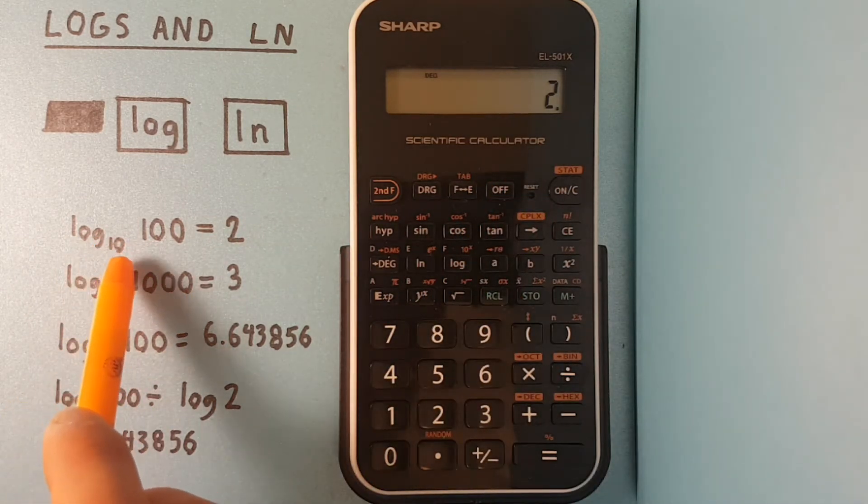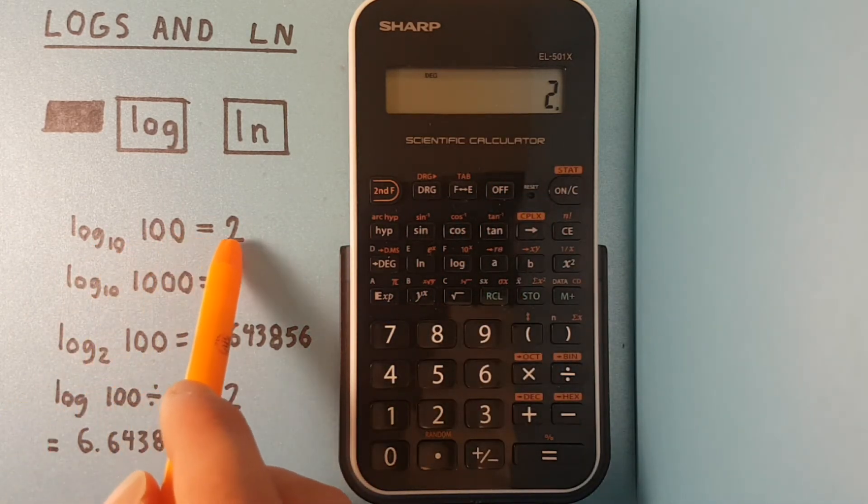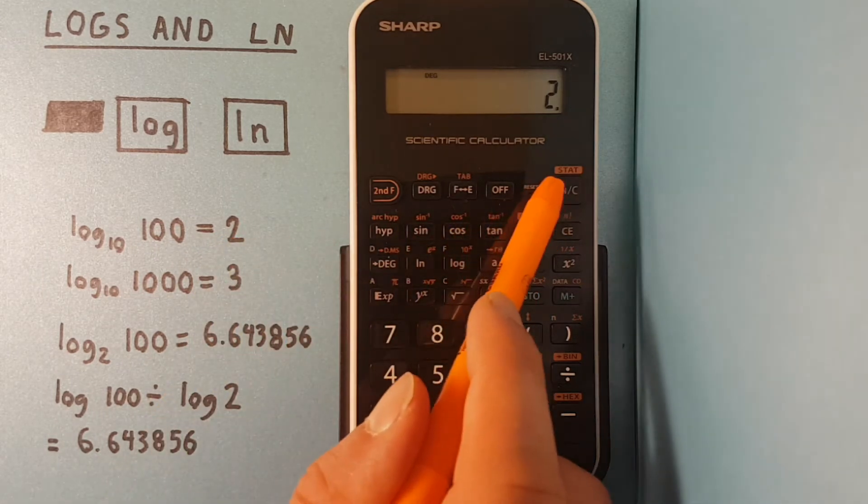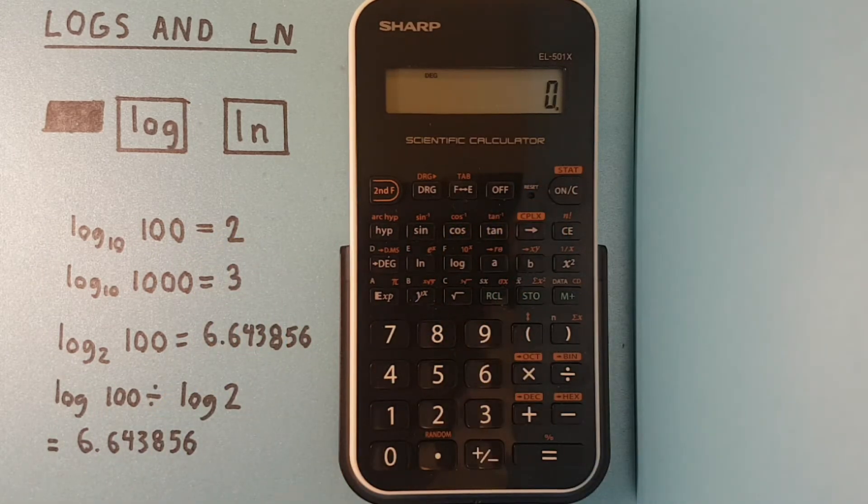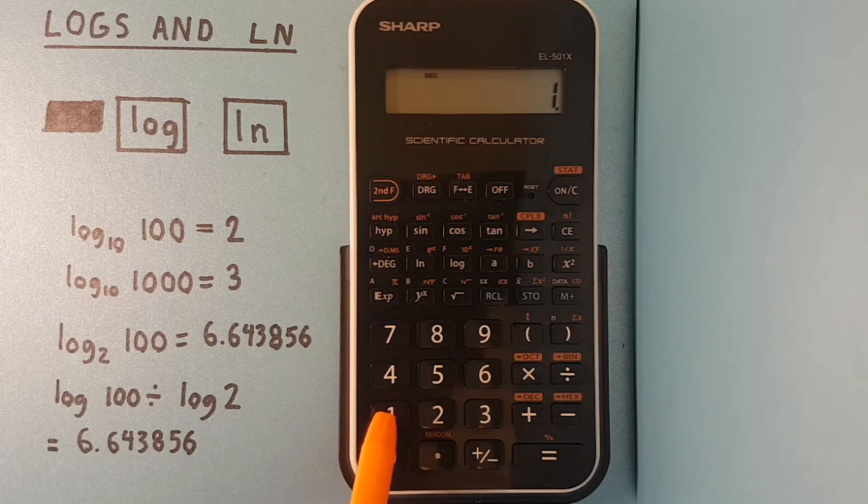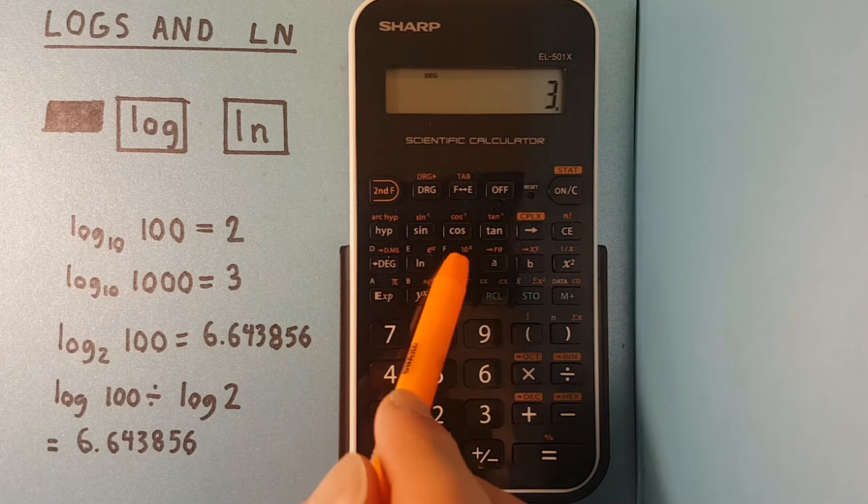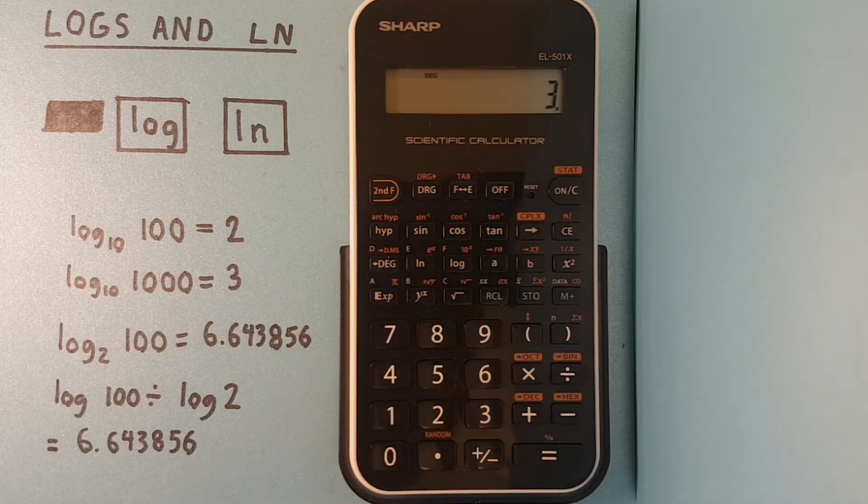We know that log base 10 of 100 equals 2, and we can try it again with 1000 just to make sure it works. So 1000 log gives us 3, which is the correct answer.